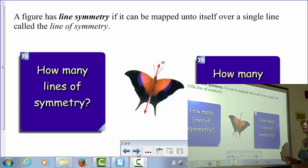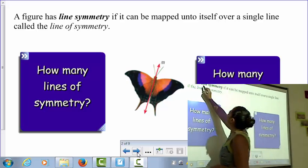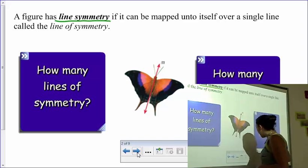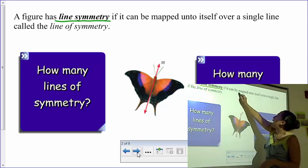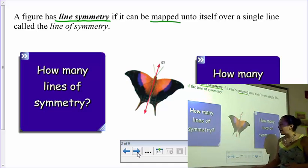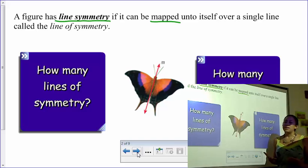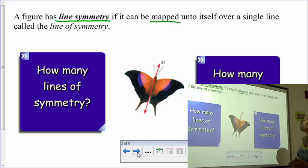For this section, just write down what you need to write down as far as definitions go. I'm not expecting you to draw the pictures. A figure has line symmetry if it can be mapped onto itself over a single line called a line of symmetry, and mapped onto itself just means that we're going to actually overlay the images so that you can't see that there are more than one image.